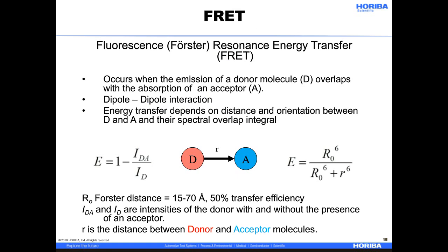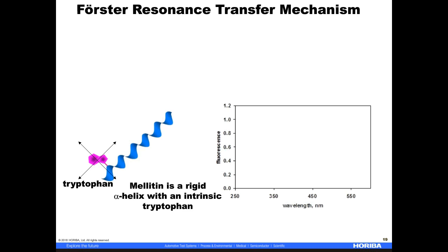Another way to use the fluorescent spectrum is Förster resonance energy transfer, also known as FRET. FRET occurs when the emission of a donor molecule overlaps with the absorbance of an acceptor molecule. When the two are close enough, they undergo a dipole-dipole interaction and energy is transferred. The distance at which there is 50% energy transfer is called the Förster distance, and this value is typically known for common FRET pairs. When you measure the spectrum of the donor alone and also the donor in the presence of the acceptor, you can use the intensity ratio in the first equation to get the efficiency of the energy transfer. E can then be used along with the Förster distance to calculate R, the distance between the donor and acceptor molecules. This is an animation of how melittin, an alpha helix with an intrinsic tryptophan, can be measured using FRET.